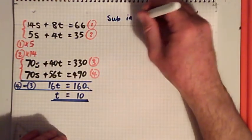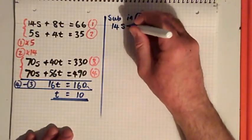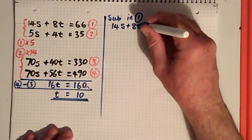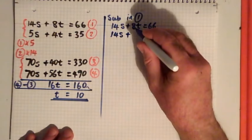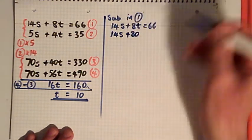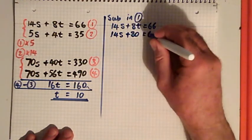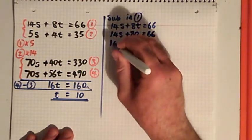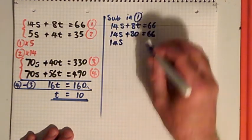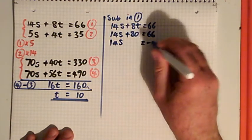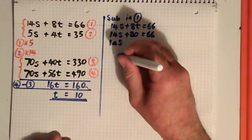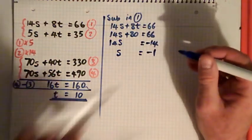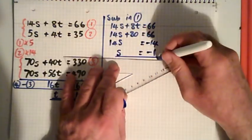Now I'll substitute that into equation 1. So equation 1 says 14s + 8t = 66. That becomes 14s + 8 times 10 = 66, so 14s + 80 = 66. I'd like to get the s bit on its own, so I'm going to subtract 80 from both sides. 14s = -14. Divide everything by 14, and s = -1.